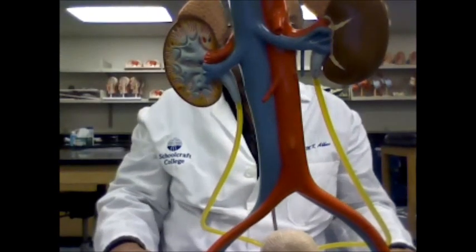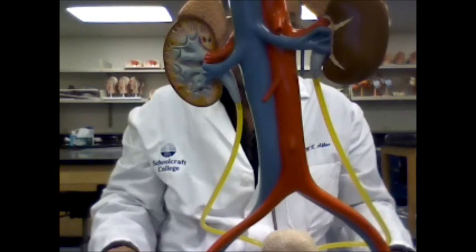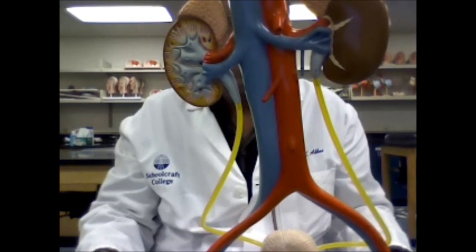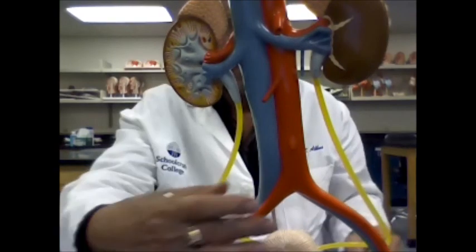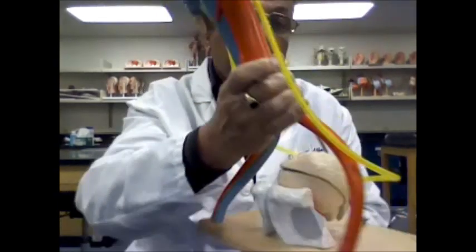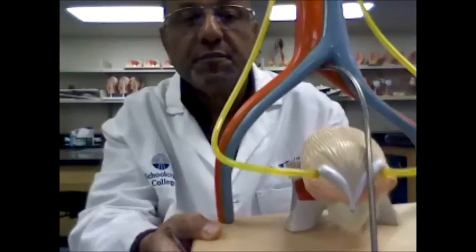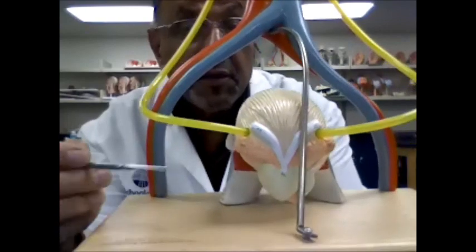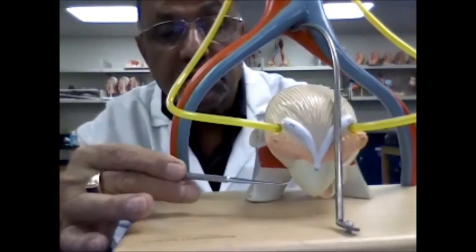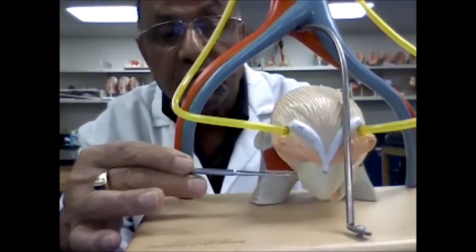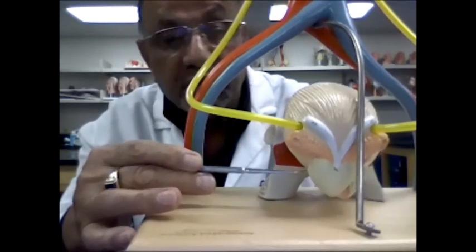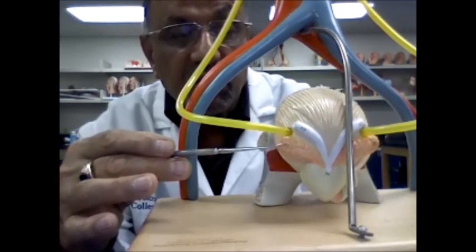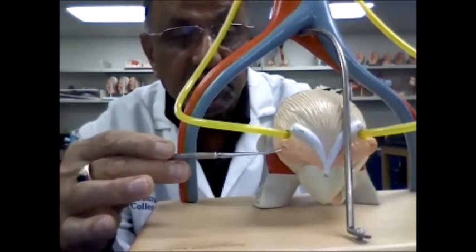This model is actually a model of the male urinary system. So, if we look at the dorsal side of the model, we see the male glands. This is the prostate gland and this is the seminal vesicle. There are two seminal vesicles.